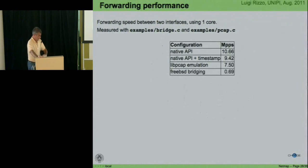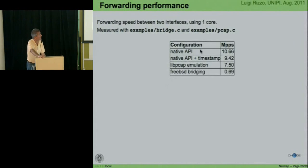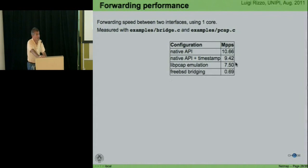Forwarding performance: a simple program taking packets from one interface and sending on another using the NetMap API, with just one core, does 10.66 million packets per second. If NetMap computes the timestamp, performance drops to 9.42 million. With the libpcap emulation, it's 7.5 million packets per second. FreeBSD bridging does about one-tenth of that — just to give an idea of the performance difference.